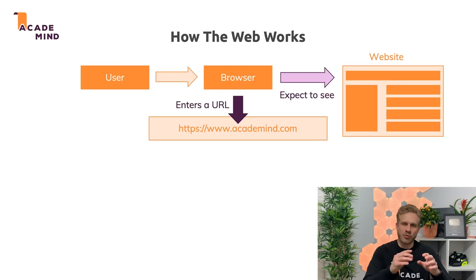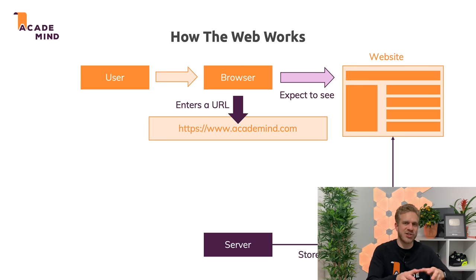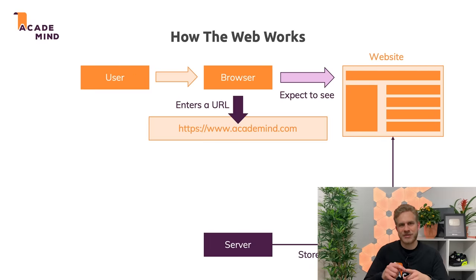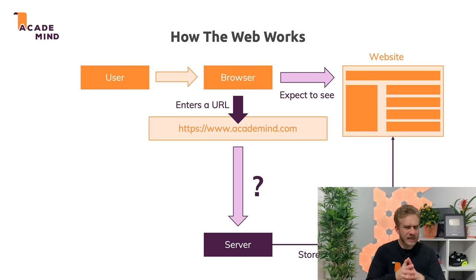The website is stored on some server. The website you're seeing is either generated dynamically there, or the code for it was stored there already and is returned back. Because your browser, in the end, is just an interpreter that gets back certain source code and can display that on the screen. One important question is: how does the server know that we mean it by entering acadamind.com? Is this the address of the server, just like your street and house number is your address?